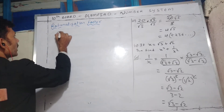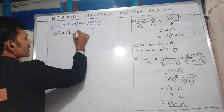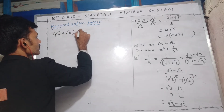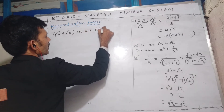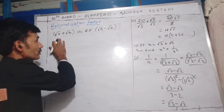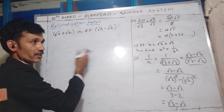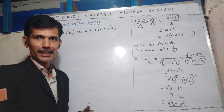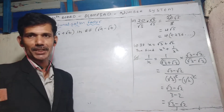In general: if √a + √b is there, its rationalizing factor is √a − √b, and vice versa. When you multiply those two expressions, you apply the identity a² − b² and you get a rational number.